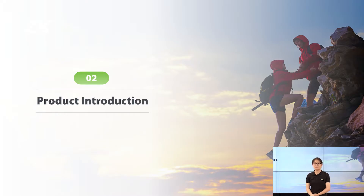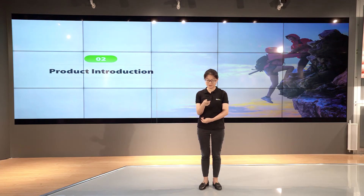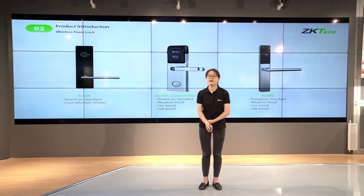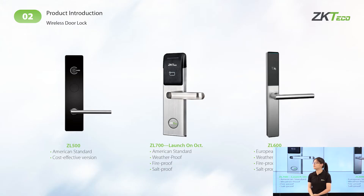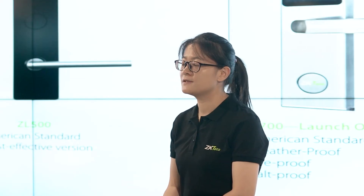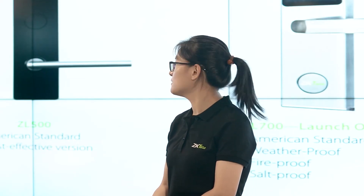This is the general introduction and overview of our solution. Next, let's go to the product introductions. First is the wireless lock. We have now released a universal economy model called CL500 on the market, and in the near future we are going to release two more models: CL600 and CL700.